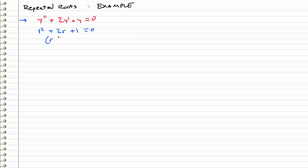We can factor this. So this gives us r plus 1 times r plus 1 equals 0. And what we see here is that our two roots, r1 and r2, are both negative 1. So this is a repeated root case.